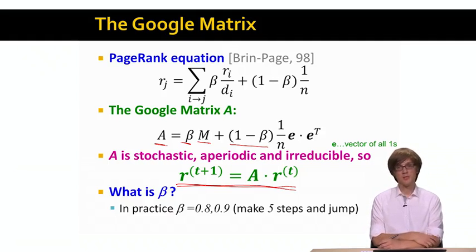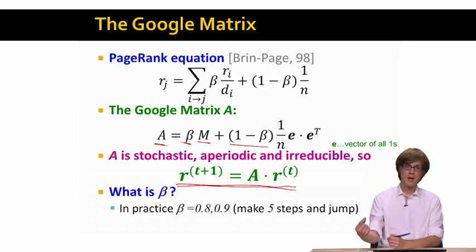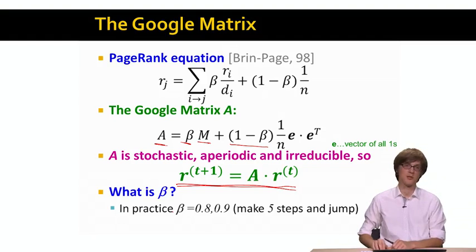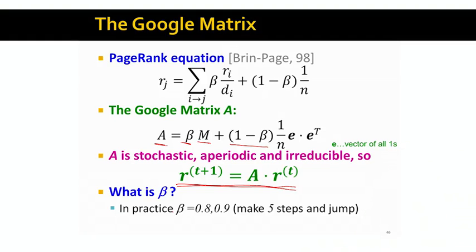So what turns out is that the good value for β is to set β between 0.8 and 0.9. And usually people set β to be 0.85. Which basically means that for every five steps, you do a random jump. So a random walker, in some sense, on the average would do five steps and a jump, another five steps and a jump, and so on. So that's basically the idea.